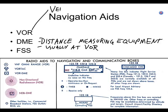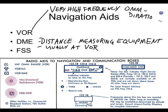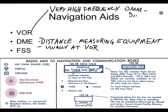VOR stands for: V is very high frequency, O is omnidirectional, R is range. Very high frequency omnidirectional range.